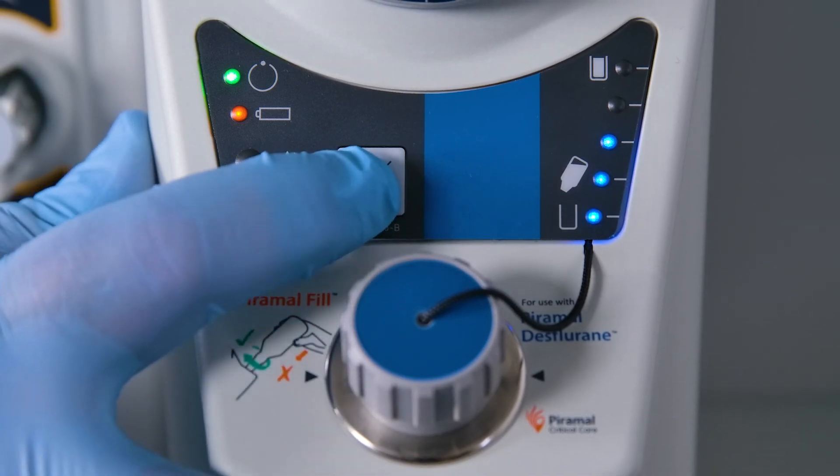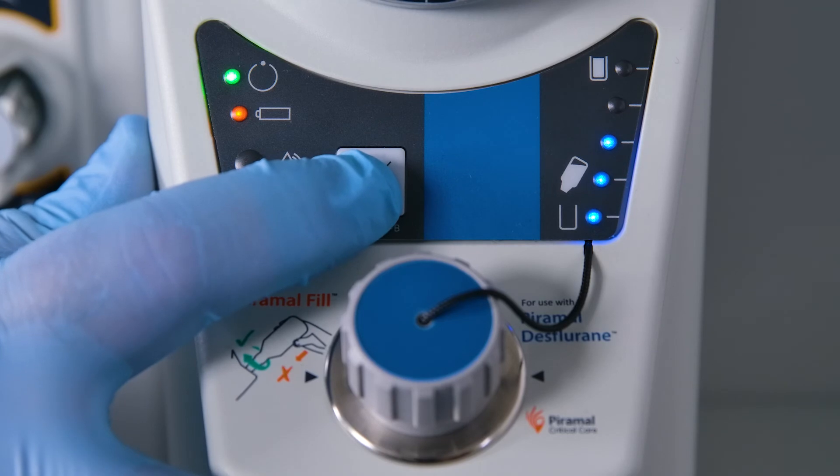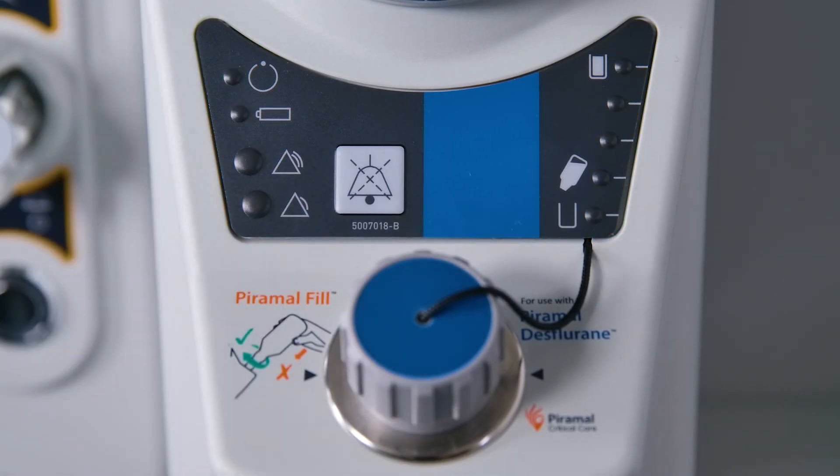Press and hold the mute control for 5 seconds to initiate a vaporizer self-test. All indicators will flash and the audio sounder operates during the test sequence. The vaporizer will return to standby mode when the self-test is complete.